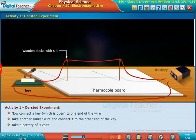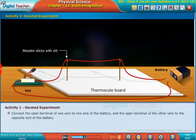Take a battery of 9 volts. Connect the open terminal of one wire to one end of the battery and the open terminal of the other wire to the opposite end of the battery.